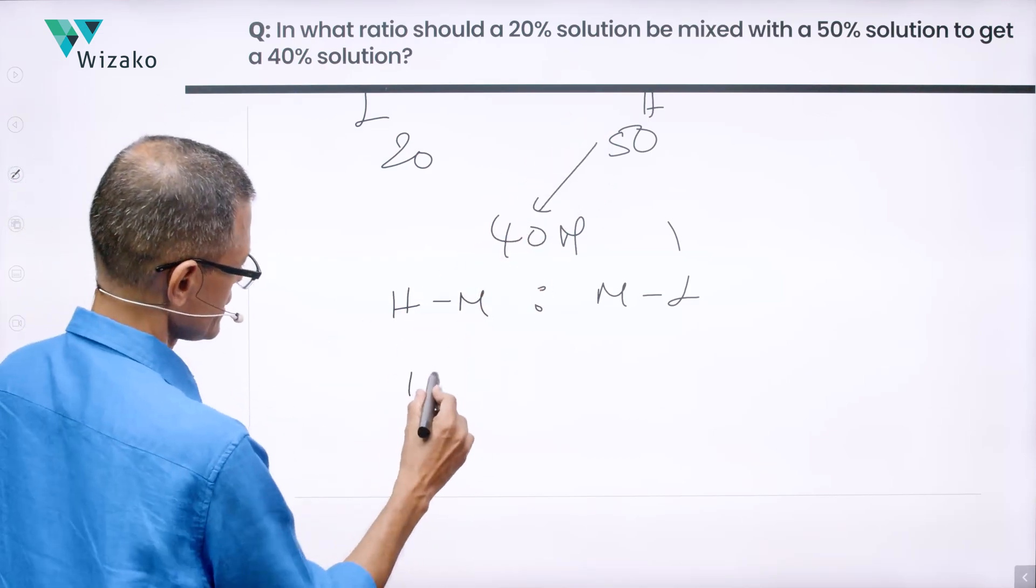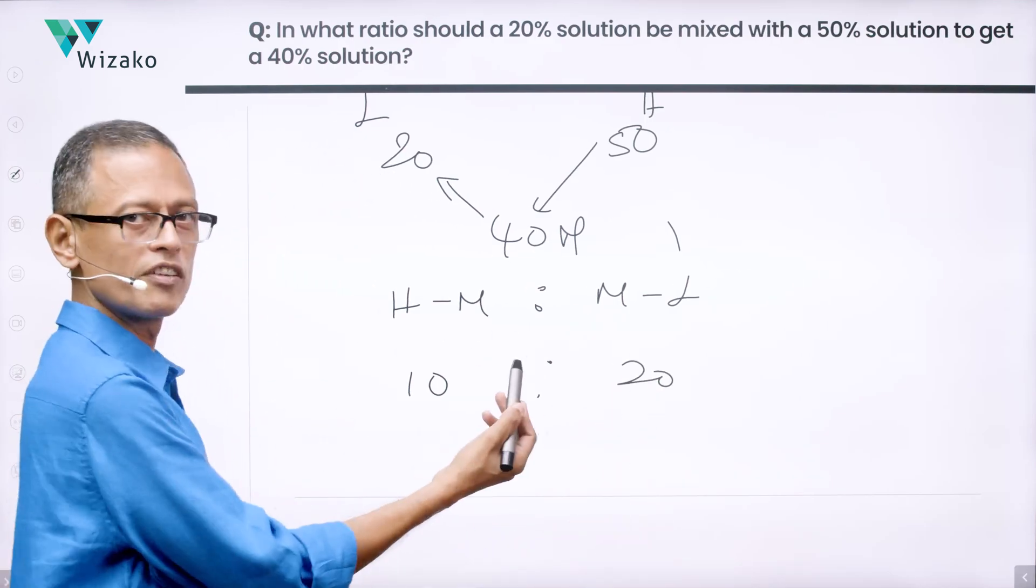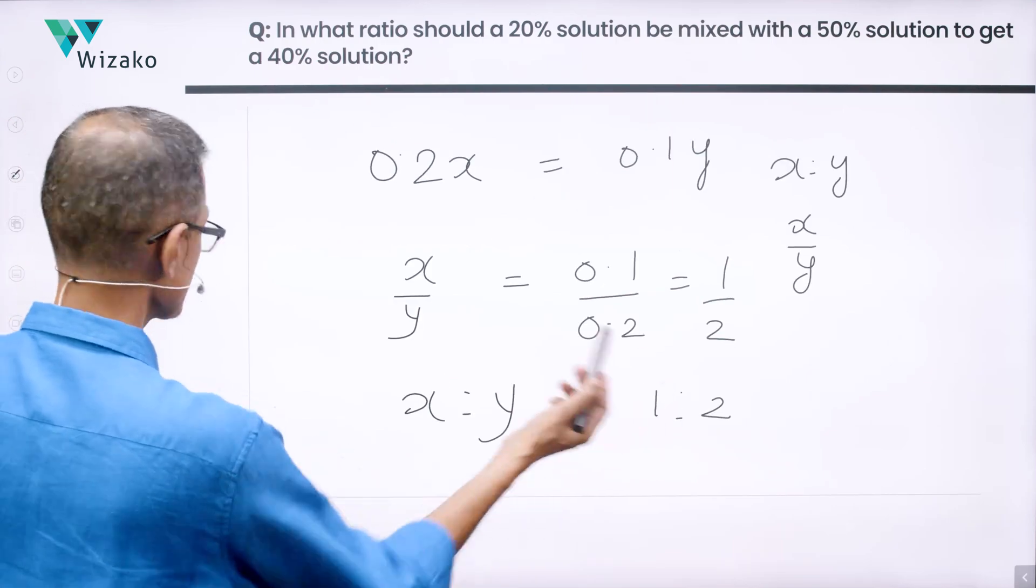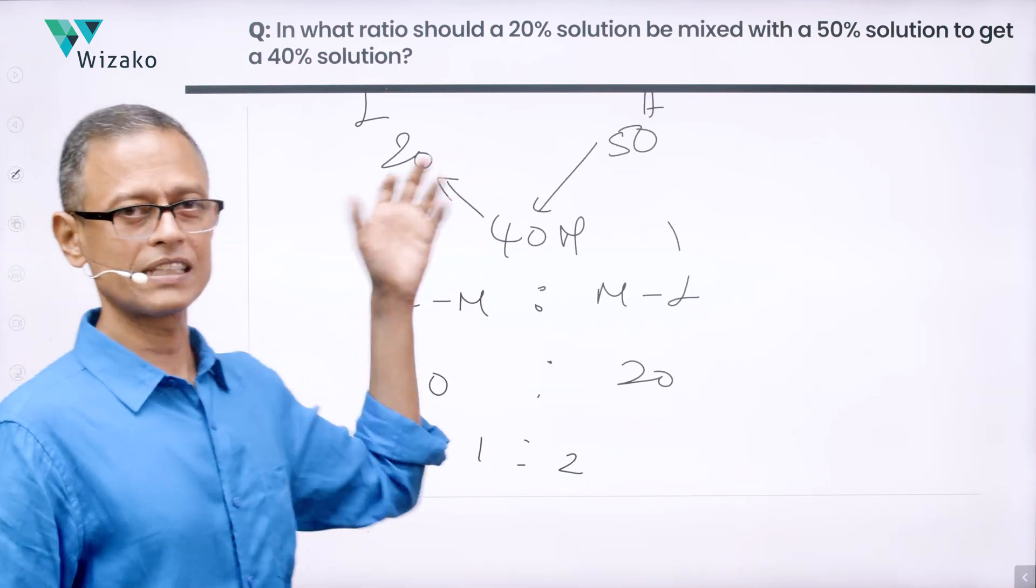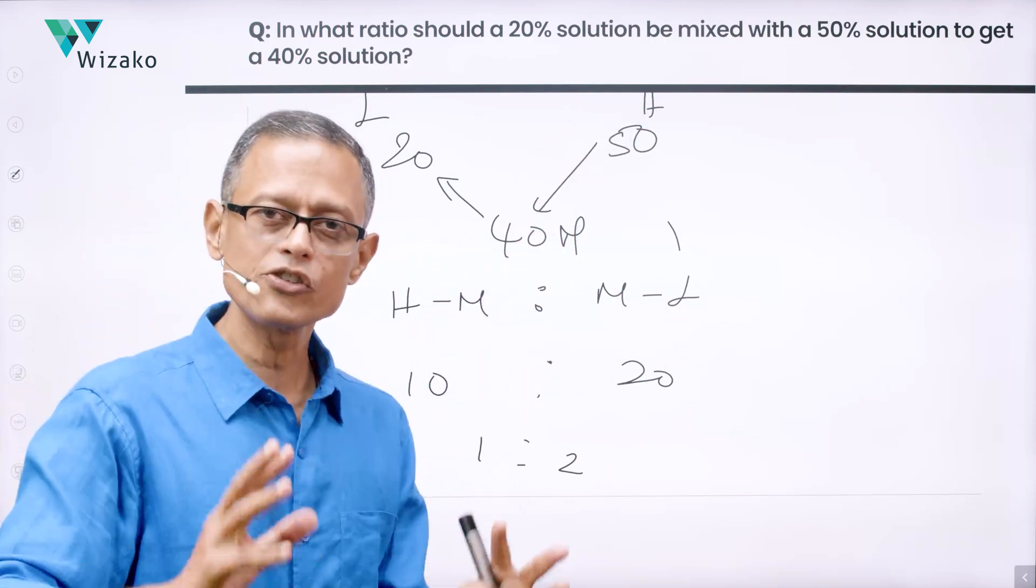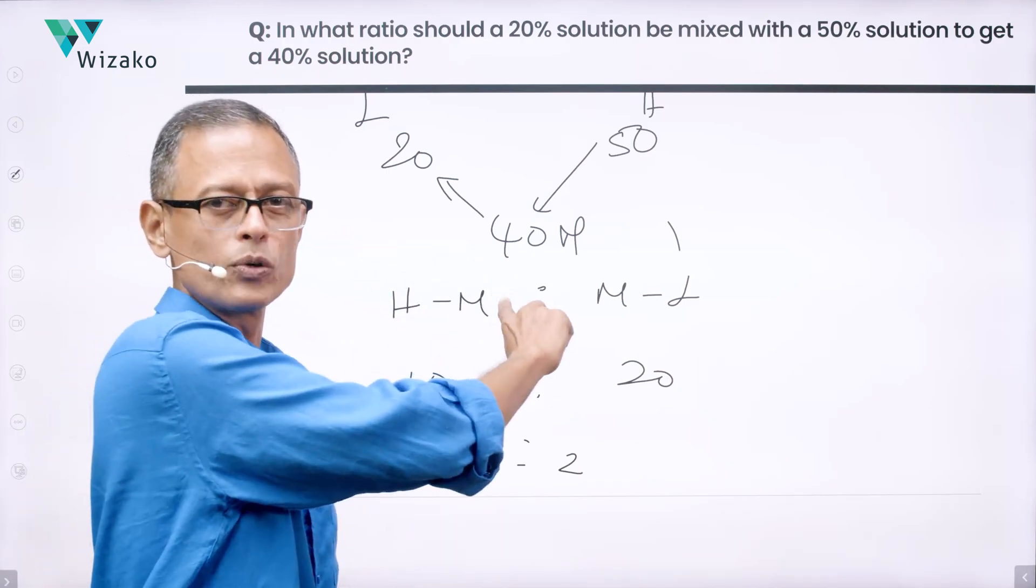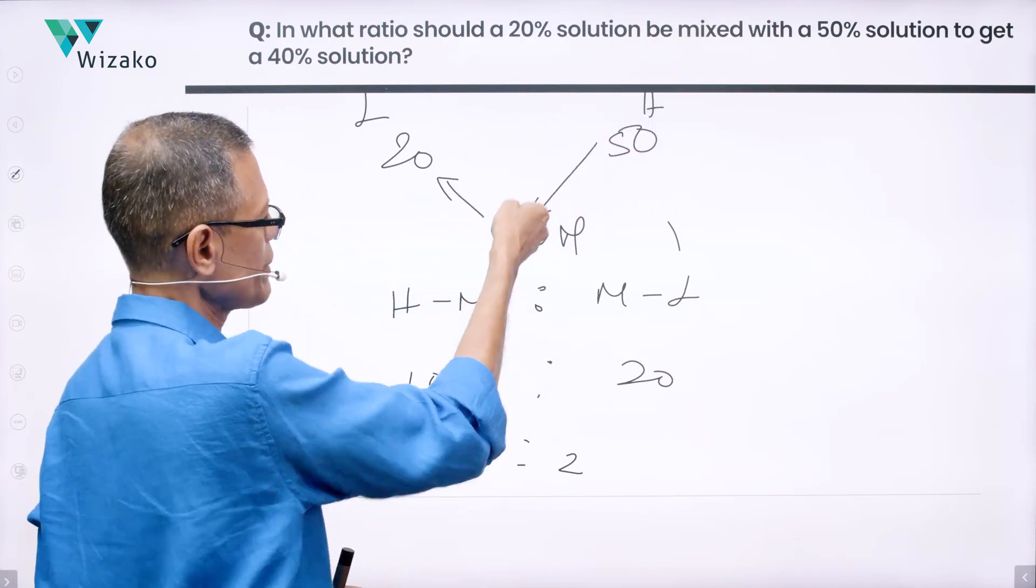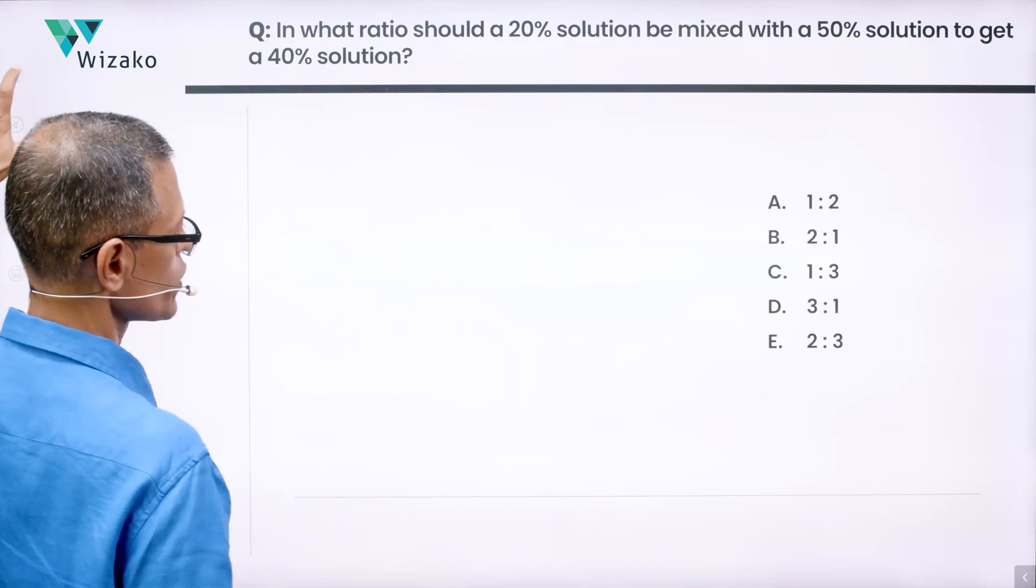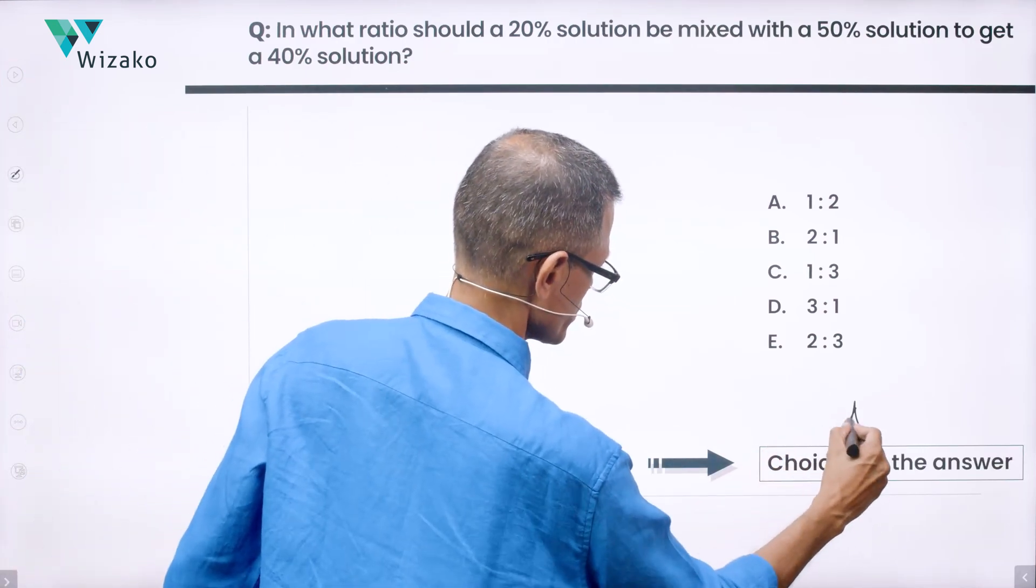50 minus 40 is 10. This is mean minus low, which is 40 minus 20, which is equal to 20. So in what ratio are we mixing it? 10 is to 20 or 1 is to 2. Is this the same answer that we got here? Yes, 1 is to 2. Look at it, this is all the time it takes you. Low concentration, high concentration, mean. High minus mean is to mean minus low is the ratio in which you're going to mix the low and high. So it takes you exactly 15 seconds. 20, 50, 40. 50 minus 40 is 10. 40 minus 20 is 20. 10 is to 20 or 1 is to 2 is the answer. Quickly look at the answer options. 1 is to 2 is choice A. This says choice B. Choice A is the correct answer to this question.